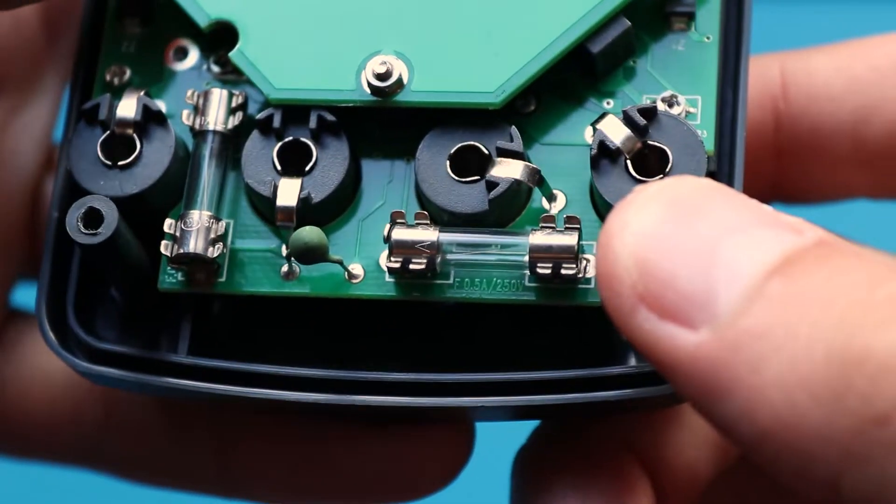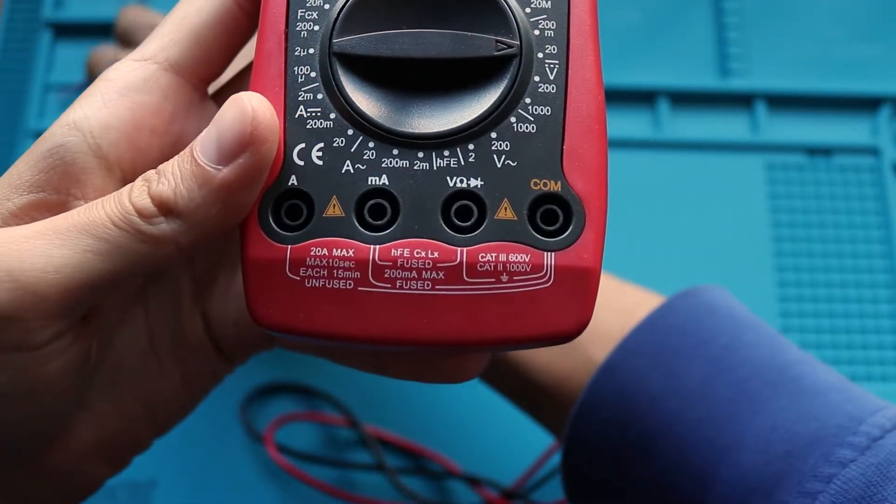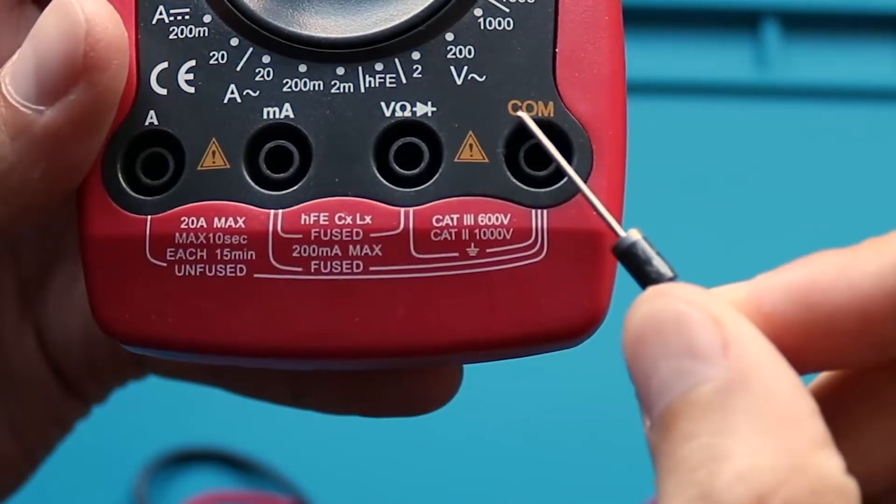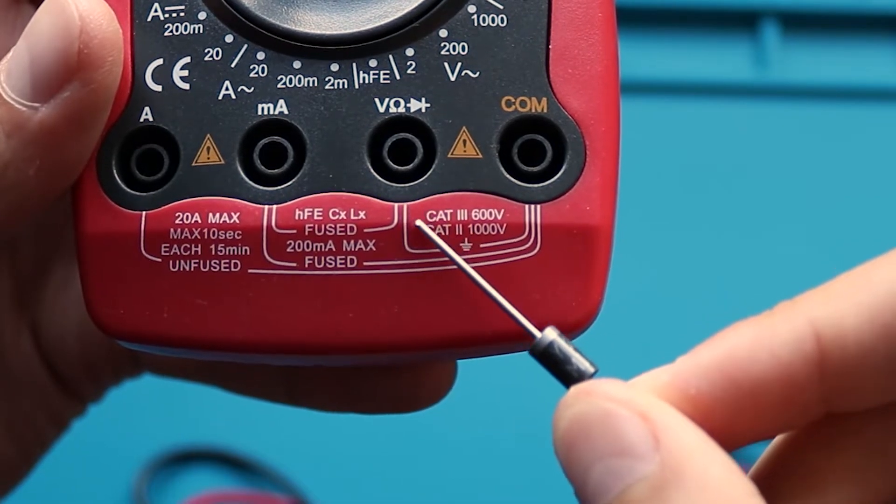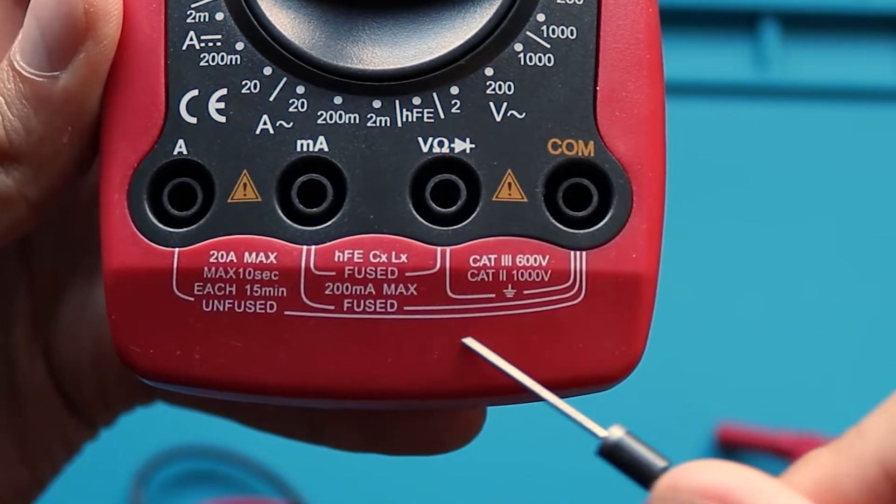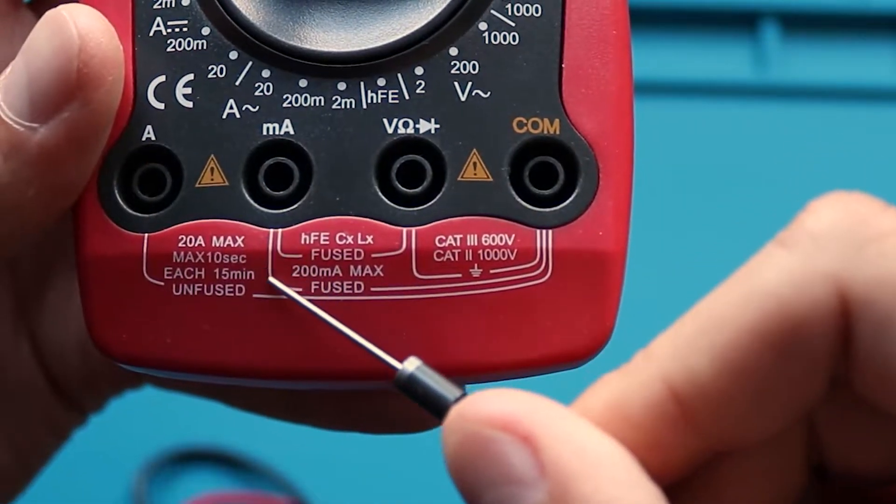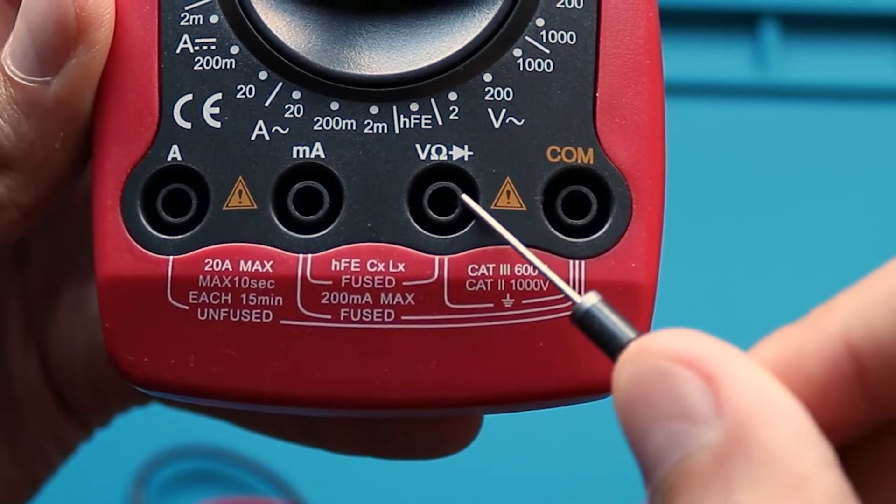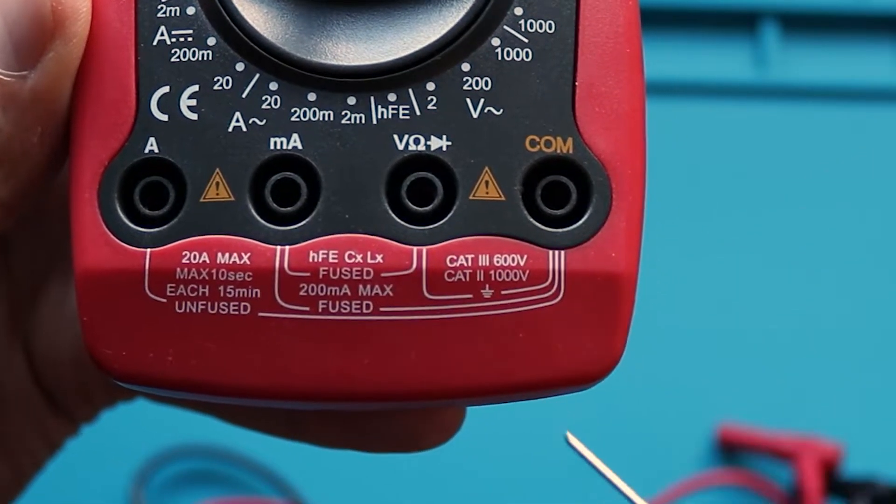Now let's have a look at what this multimeter can do and how to use it. Measurement options are specified on the case. For example, these two channels are responsible for voltage, resistance measurement and diode testing. These two are responsible for high current measurement. These two for low current measurement. And the middle two for inductance, capacitance and transistor amplification coefficient measurement.